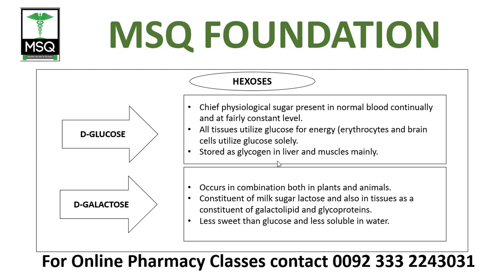D-galactose occurs in combination in both animals and plants. It is the main constituent of milk sugar lactose, and is also found in tissues as a constituent of galactolipid and glycoprotein — which is a conjugated molecule. It is less sweet than glucose and less soluble in water.